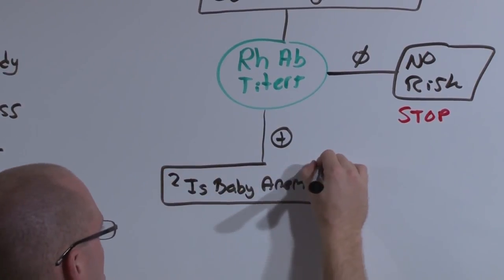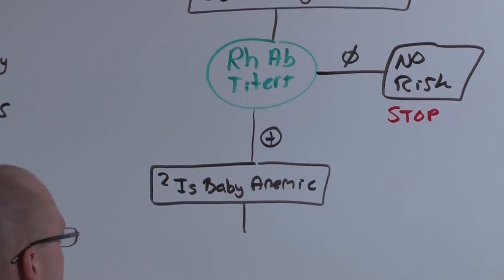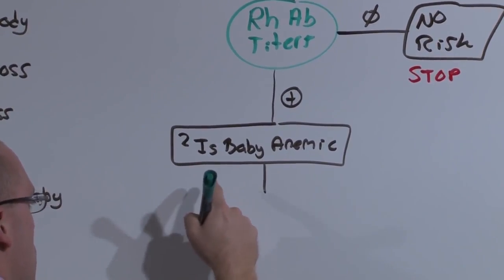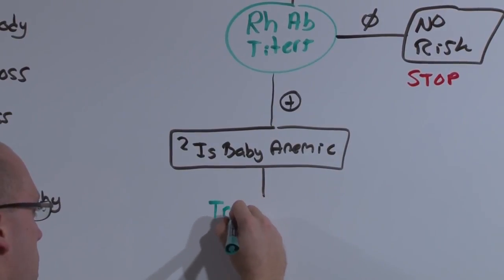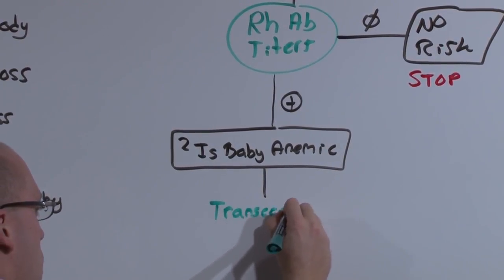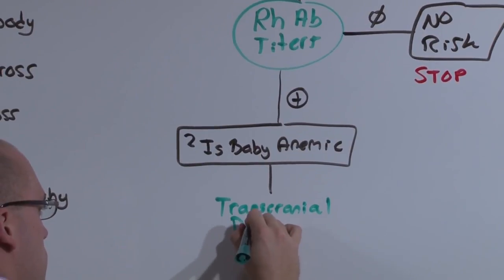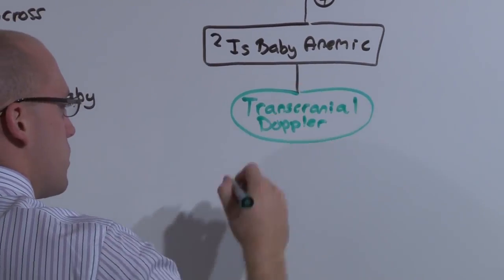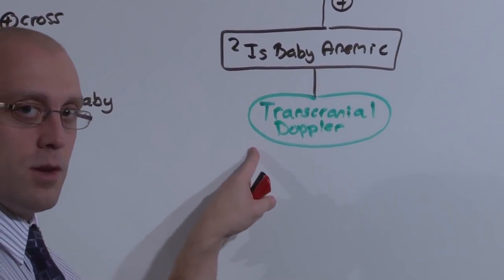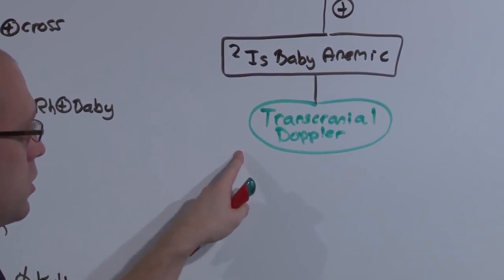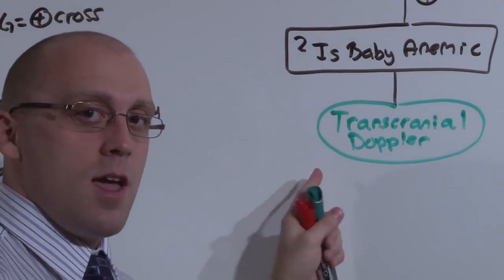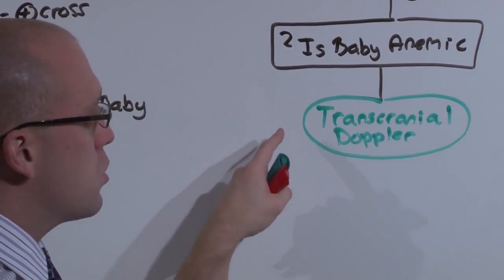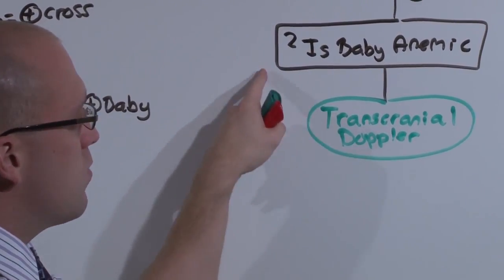Because if these antibodies aren't there, there is no risk and you can simply stop the workup. But if those antibodies are there, the next question you ask is, is baby anemic? And there's a number of ways you can do this. But the way, the diagnostic modality of choice is a transcranial Doppler. If you remember from our advanced early testing lecture, the transcranial Doppler is an ultrasound, it's non-invasive and is very sensitive for fetal anemia.